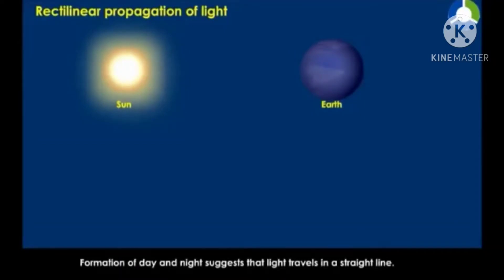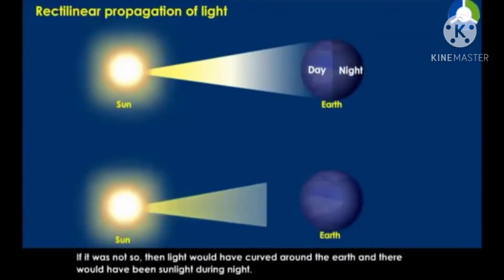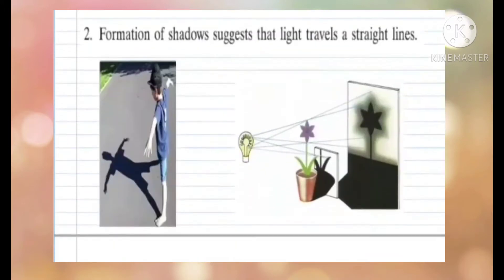Formation of day and night suggests that light travels in a straight line. If it were not so, the light would have curved around the earth and there would have been sunlight during the night. This example satisfies the first application of rectilinear propagation of light.